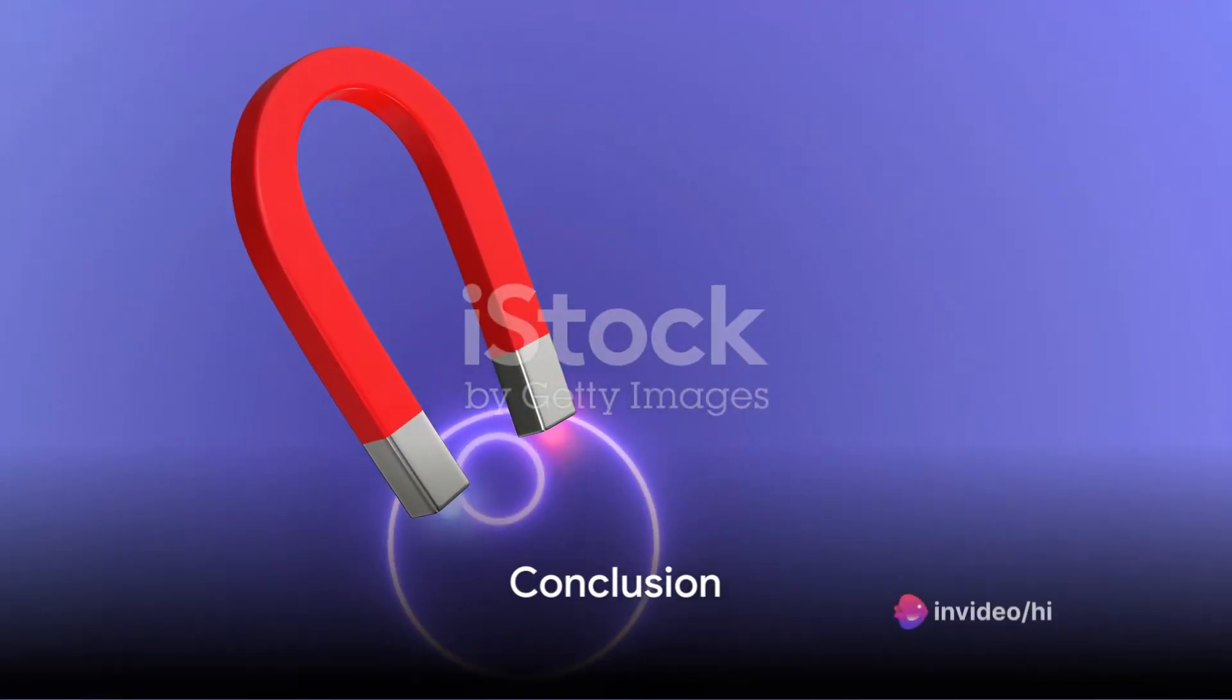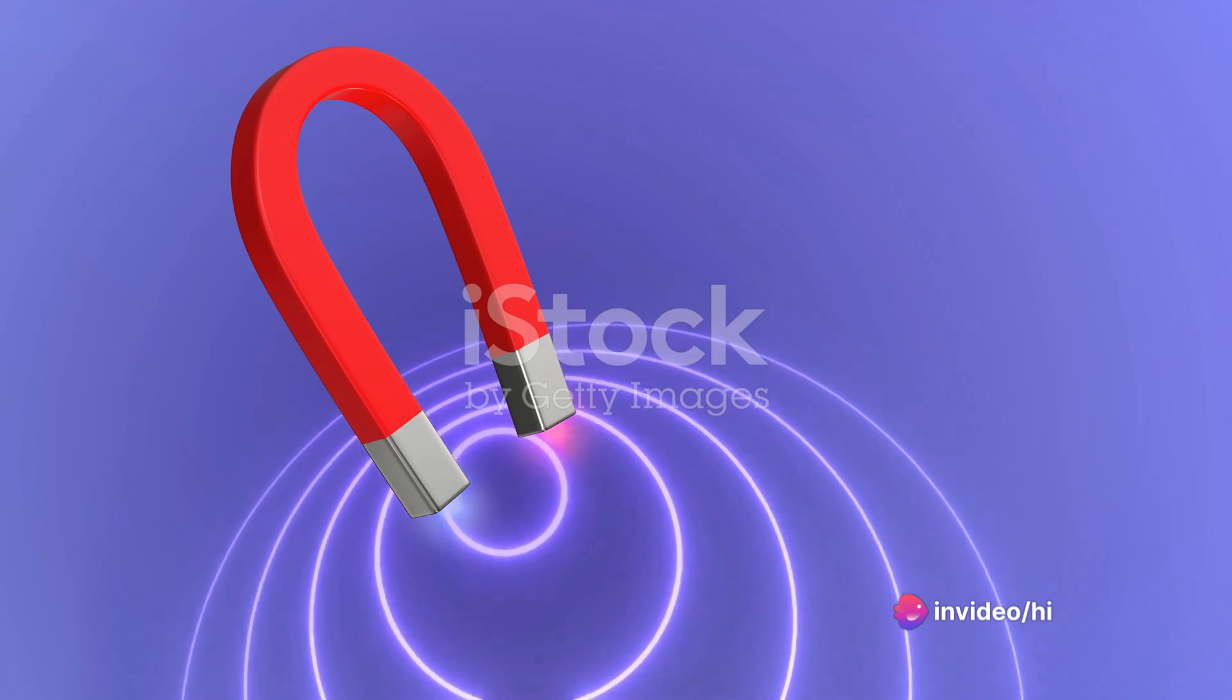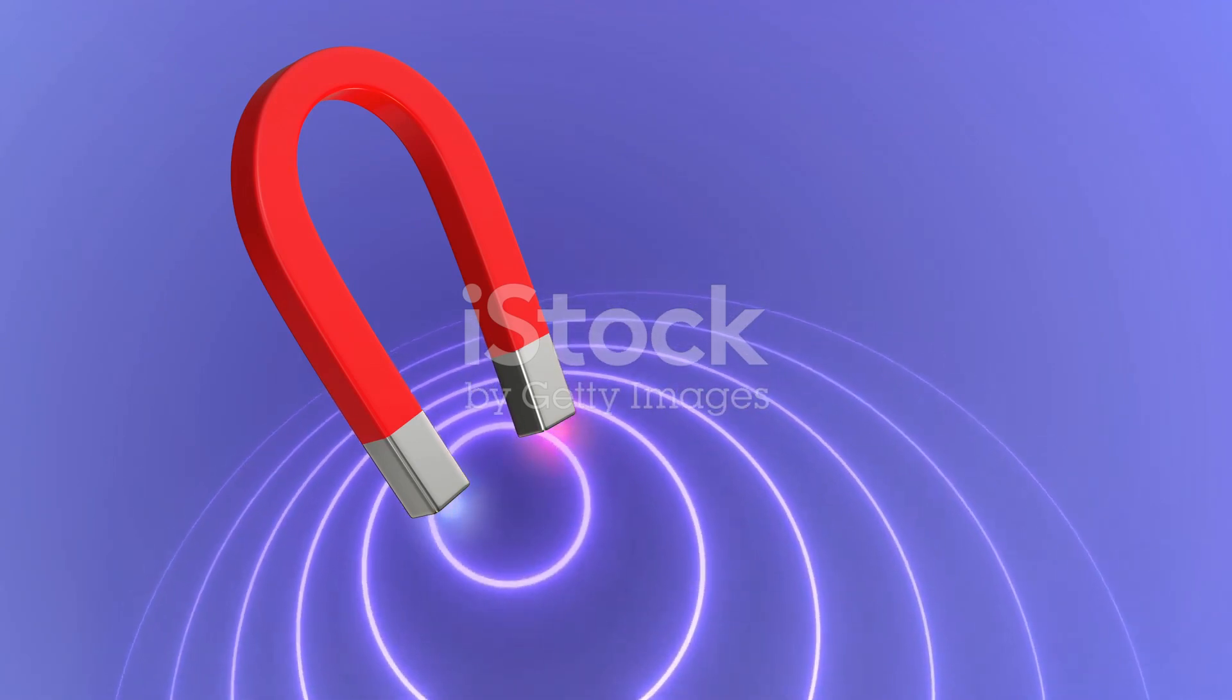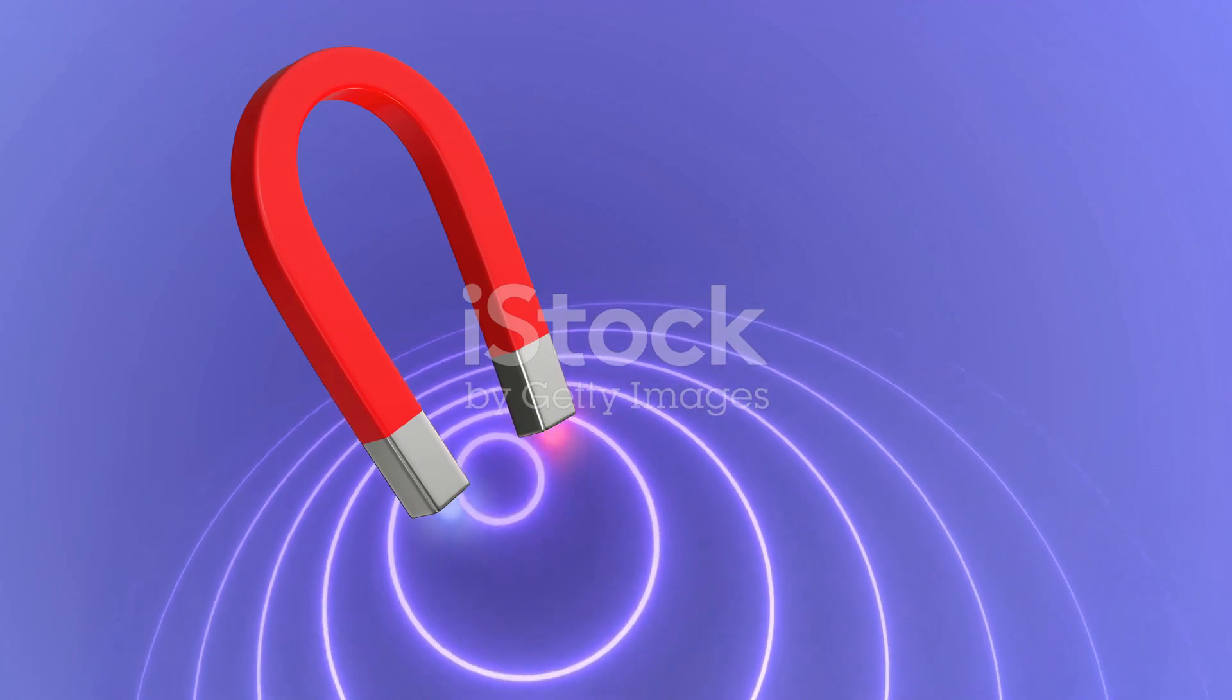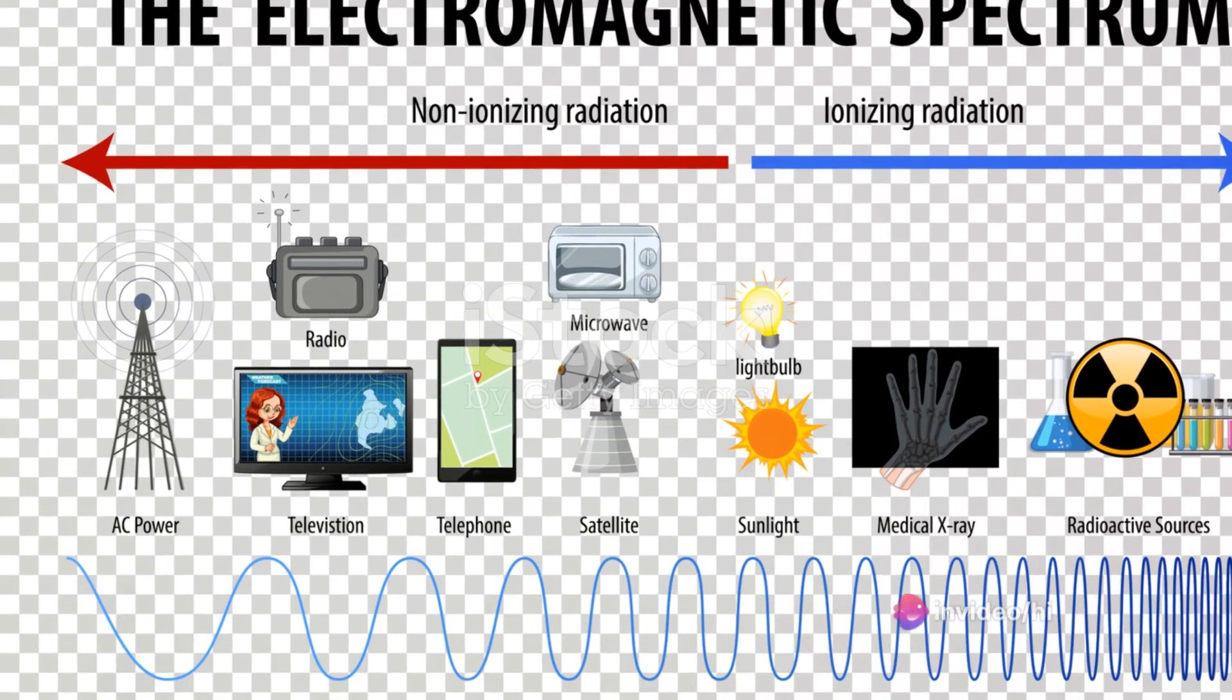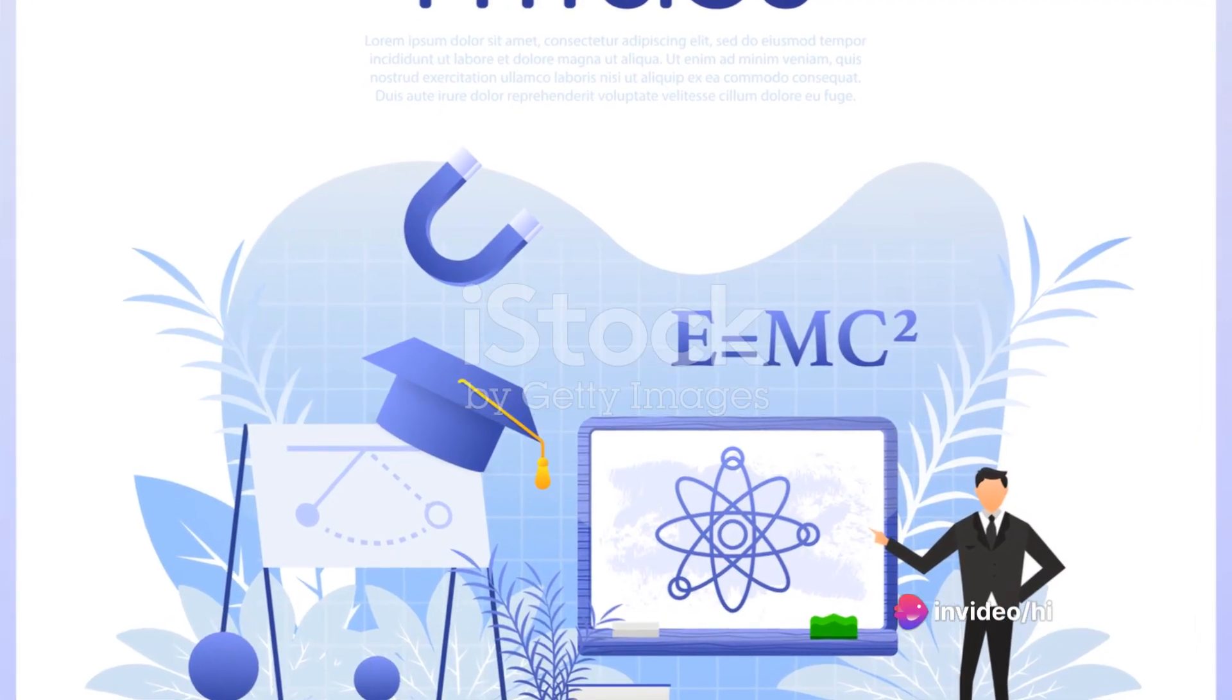In essence, these electromagnetic properties are the rulebook that governs how materials interact with electric and magnetic fields. They're crucial in many scientific and engineering applications, from designing electronic circuits to studying materials for communication systems, and even in the development of technologies that manipulate electromagnetic fields.